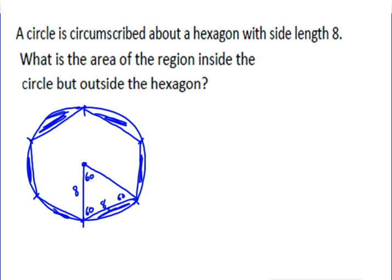So if the radius is 8, the area of the circle is πr², which would be π(8)² = 64π.